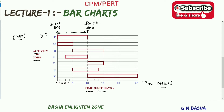There are 7 distinct jobs or activities — P, Q, R, S, T, U, V — to be performed for the project's completion. The durations required for completion of these activities are as follows: activity P has a duration from 0 to 10, which is around 10 days. Activity Q runs from 0 to 5.